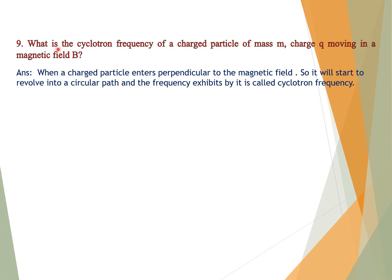Question number nine: What is the cyclotron frequency of a charged particle of mass M and charge Q moving in a magnetic field B? Answer: When a charged particle enters perpendicularly to a magnetic field, it starts to revolve in a circular path, and the frequency it exhibits is called cyclotron frequency. F = QB / (2πM).